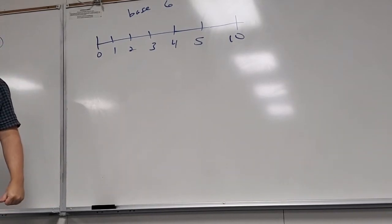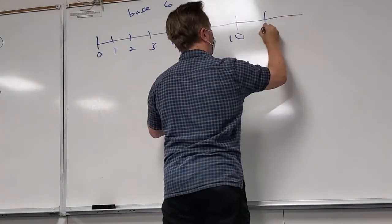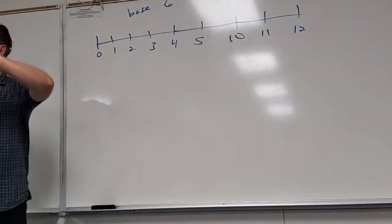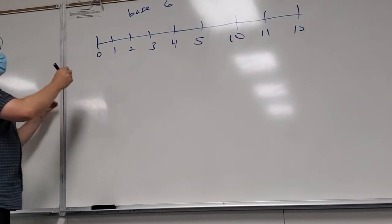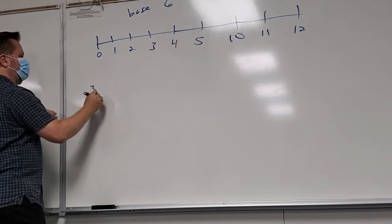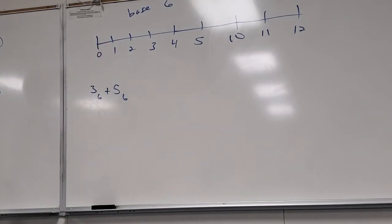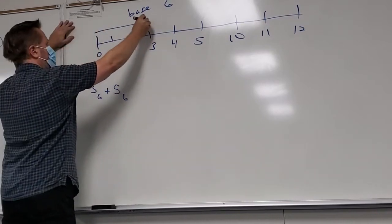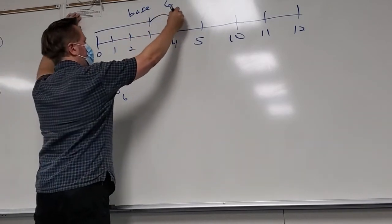For base five it's going to be one, two, three, four, ten — then eleven, twelve, and so on. So if I wanted to investigate what is three base six plus five base six, how can I do it on this number line? How would we show students to use a number line to investigate addition? I go up three — that's three base six — and then I go one, two, three, four, five.